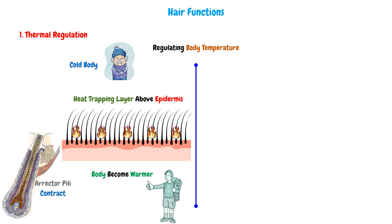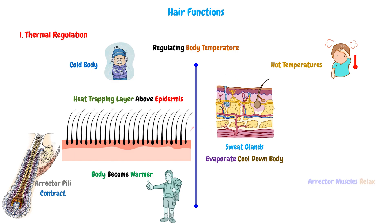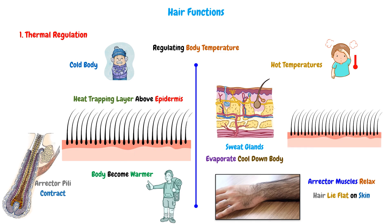In contrast, in hot temperatures, the sweat glands will secrete sweat that evaporates to cool down the body. So the erector muscles relax, and the hair will lie flat on the skin. So this heated rubbing layer disappears, and the body cools down. This is regarding the thermal regulation function.